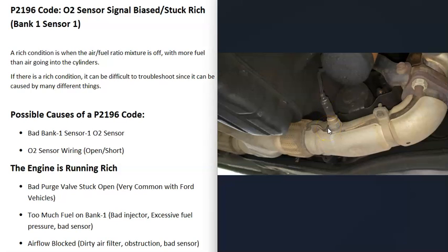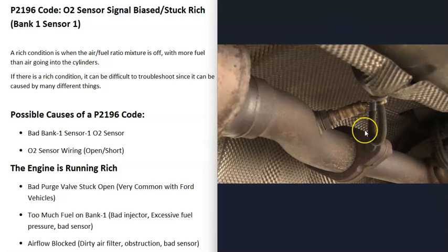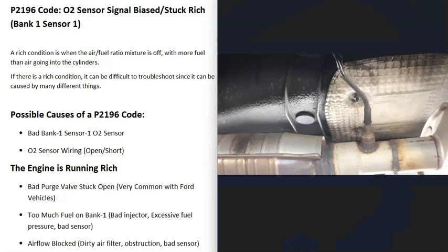One possible cause of a P2196 code is that the bank one sensor one oxygen sensor has simply failed and is reporting bad information to the computer, making it think there's a rich condition when there isn't. Be sure to test that sensor, and also check the wiring — an open, short, or bad connection will cause the same symptoms as a bad sensor.